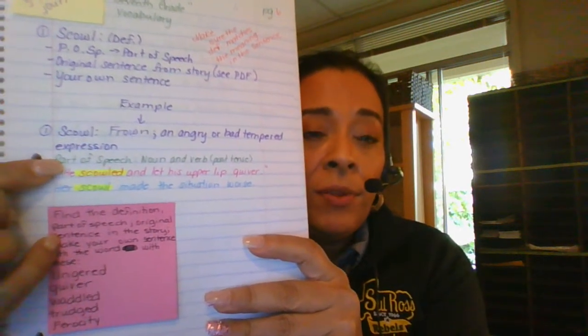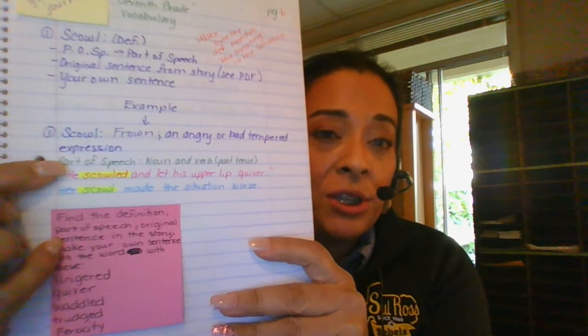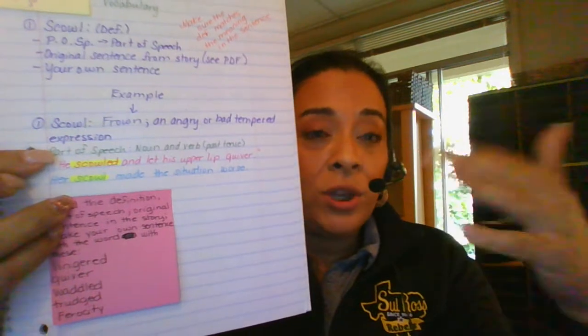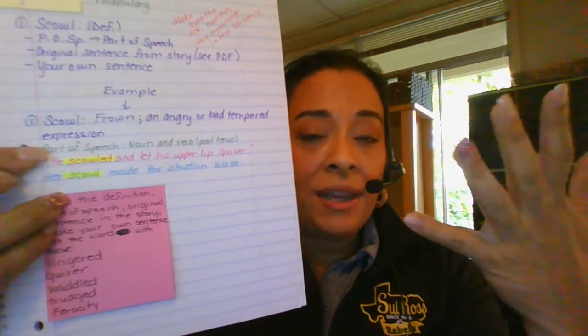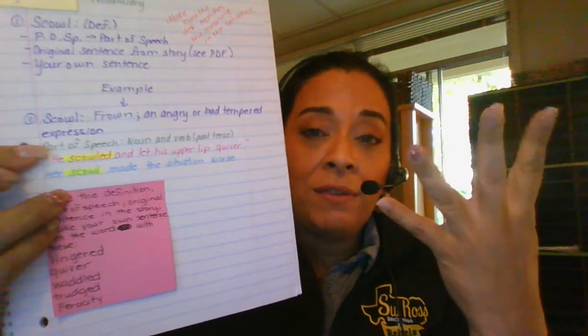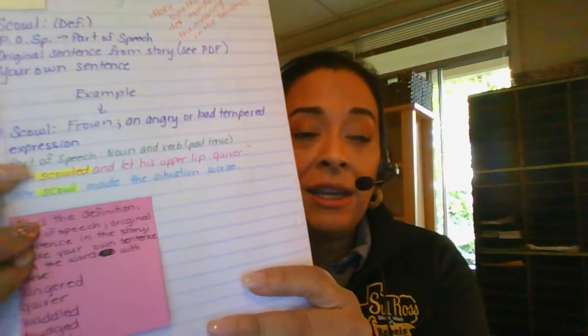Then from there, you're going to tell me the part of speech. The part of speech is in your writing L and B. It is what the word means. Like, for example, is it a noun, verb, adjective, adverb, pronoun? You're going to identify it.